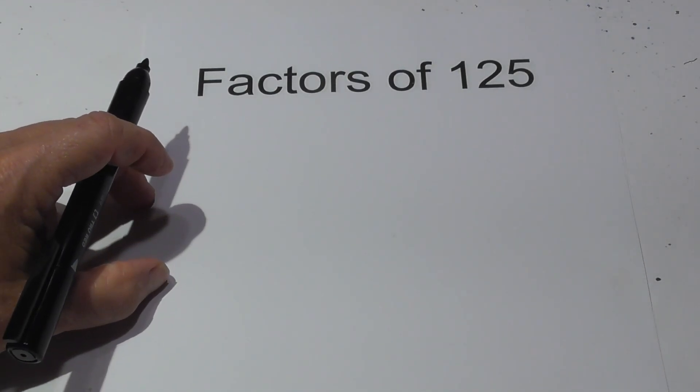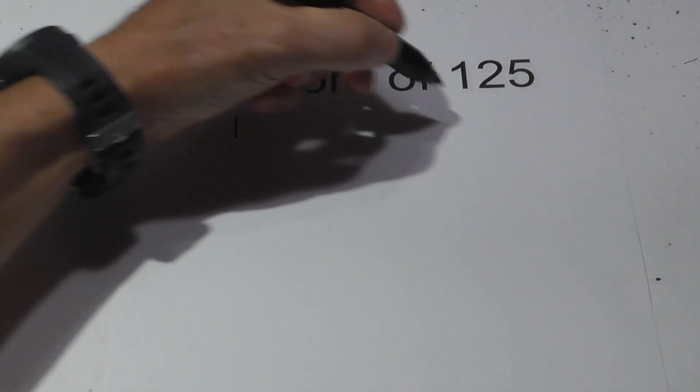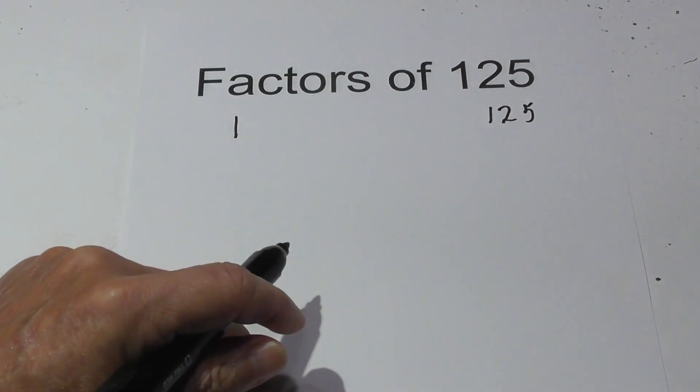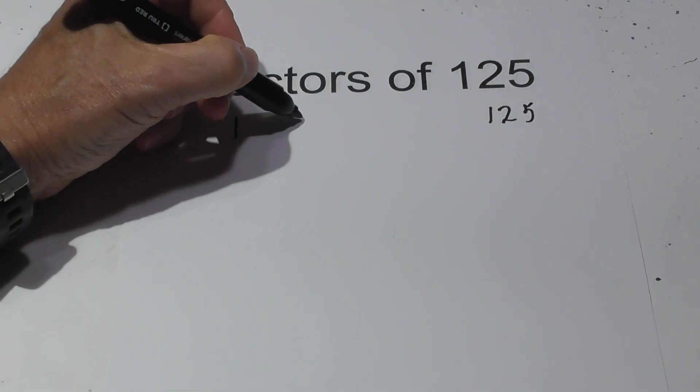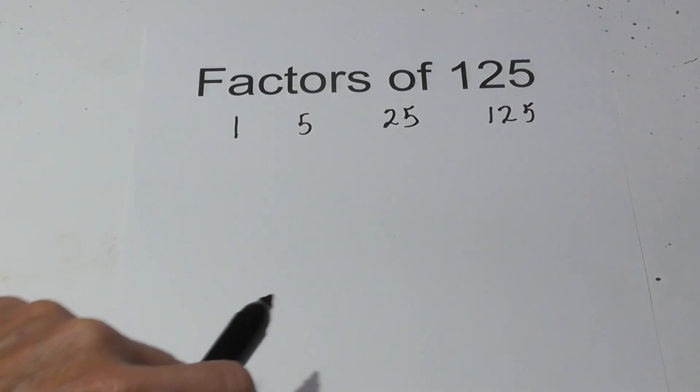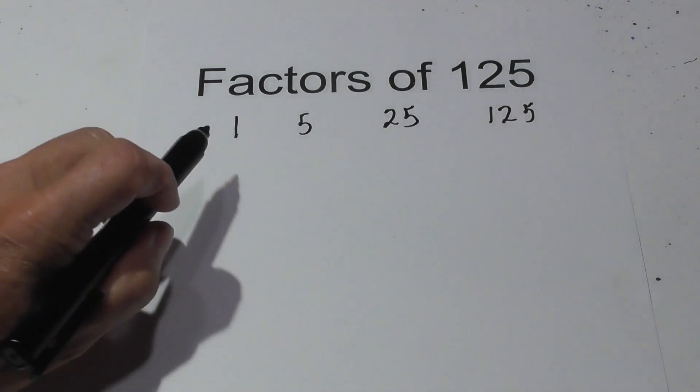Welcome to Moo Moo Math and Science and the Factors of 125. 125 is a composite number, so let's begin with 1 times 125. Next we can try 5 times 25, so those are the factors of 125: 1, 5, 25, and 125.